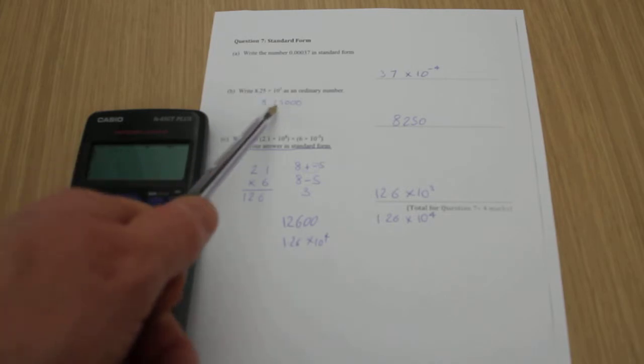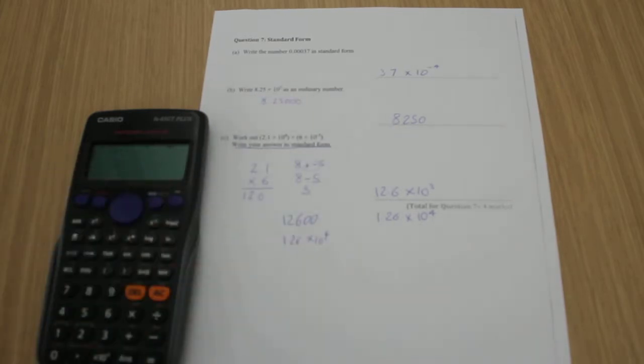So I've got 3 here, so I've come along 1, 2, 3, and I end up with 8,250.